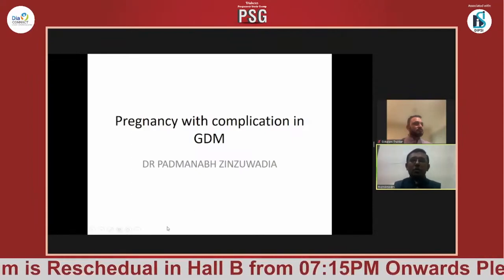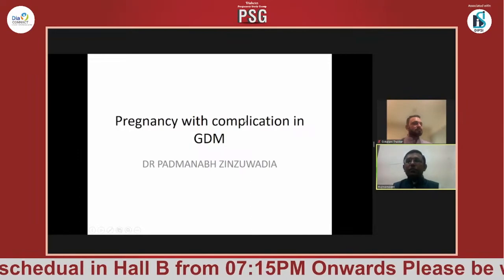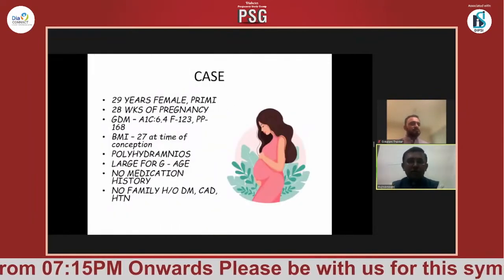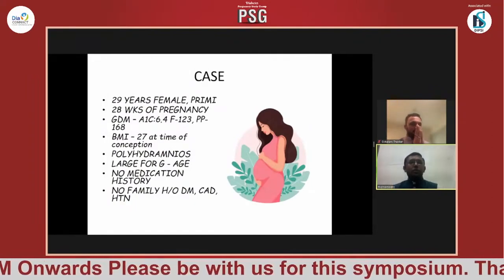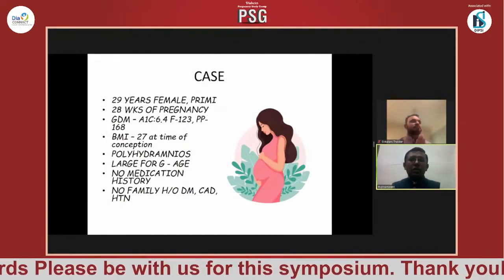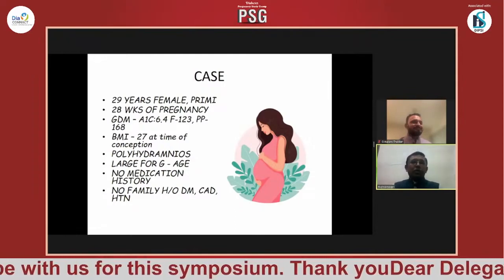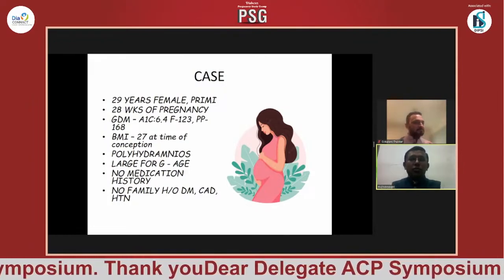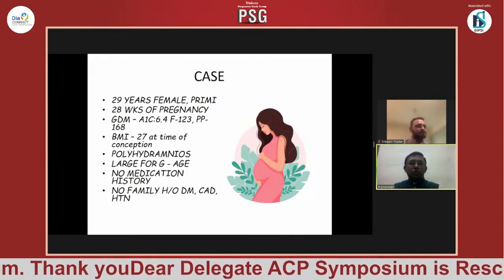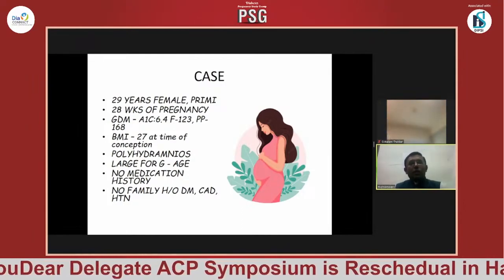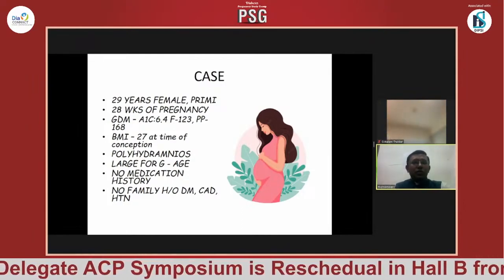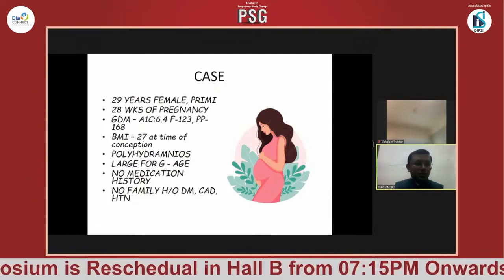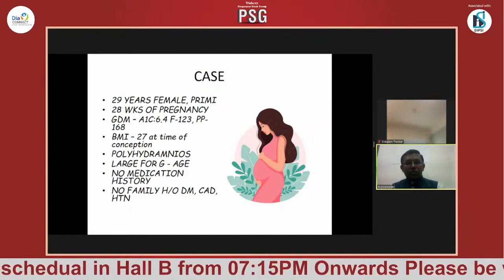Today my talk is about pregnancy with complication in GDM. I am presenting a case of a 29-year-old female patient referred by our gynecologist. The patient is a primigravida at 20 weeks of pregnancy. Her glycemic profile is disturbed: HbA1C of 6.4, fasting sugar 123, postprandial about 168, and BMI of 27 before conception. The patient now has polyhydramnios and the baby is large for gestational age.